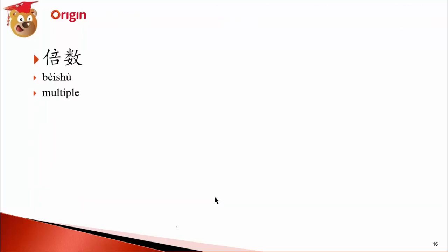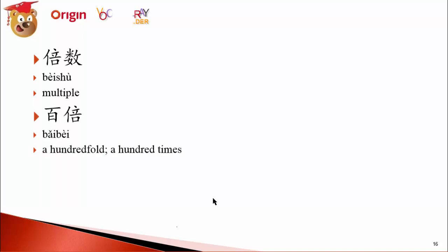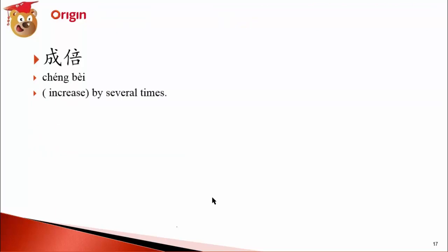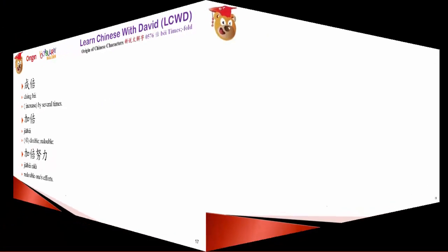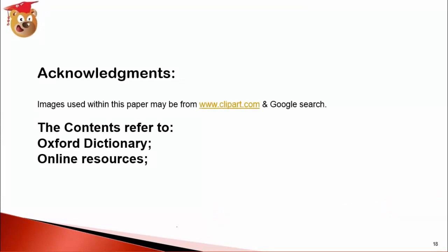倍 also appears in 数倍 (shùbèi), meaning 'multiple times.' 百倍 means a hundred times. 成倍 means 'increased by several times.' 加倍 (jiābèi) means double or redouble — for example 加倍努力 means 'redouble your effort,' work very hard. So remember: 加倍学习 — redouble your studying efforts! See you next lesson. Bye bye!